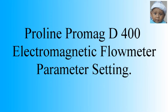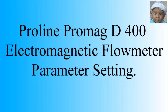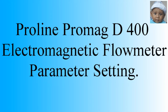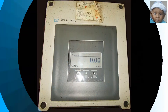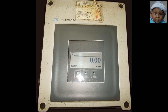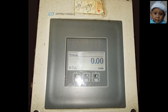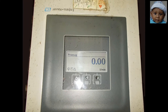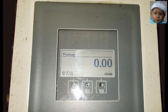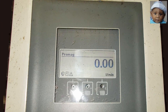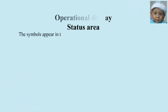Hello guys, this is Mohammed Rashid and today we are going to learn parameter setting on ProLine ProMag D400 electromagnetic flow meter. We will also see how to set 4 to 20 mA signal according to flow, and then we will see from where we can check signaling through simulation.